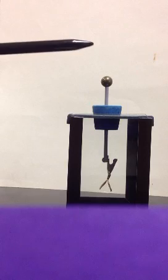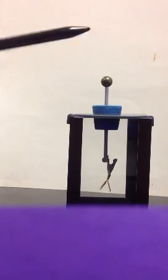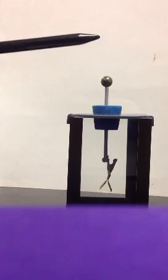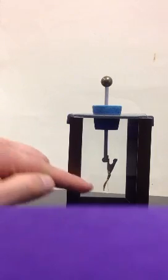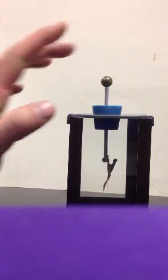So bring this close, and you see those leaves separating, and those leaves separate because the negatively charged rod pushes electrons from the top down to the bottom, and leaves those things negatively charged so they repel each other.